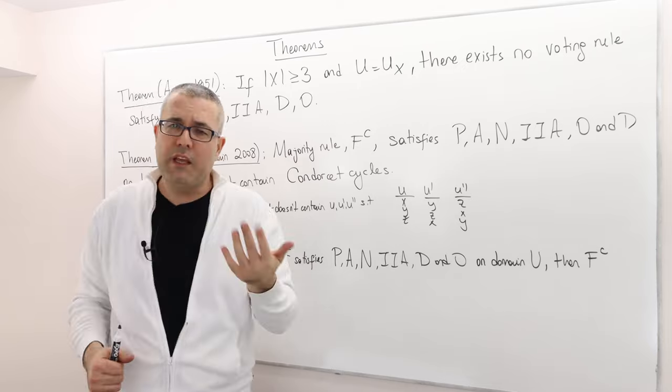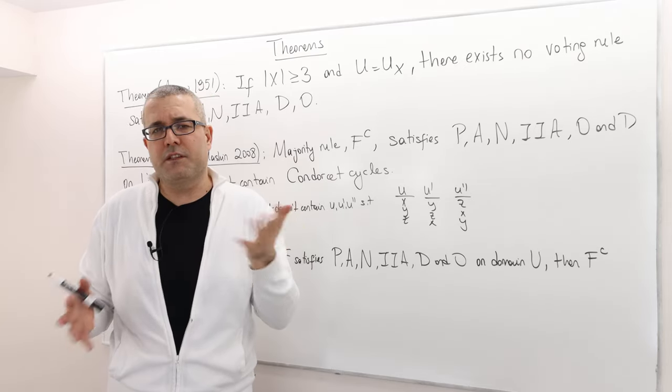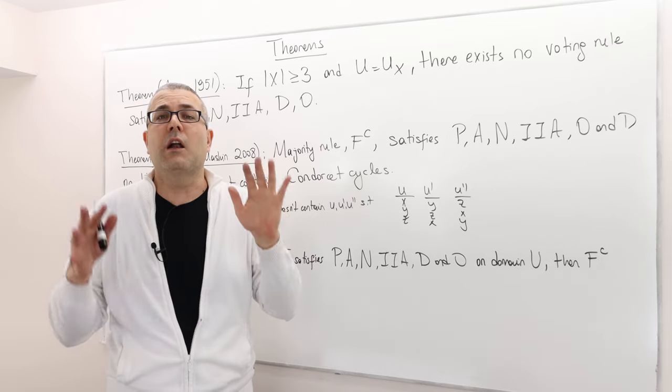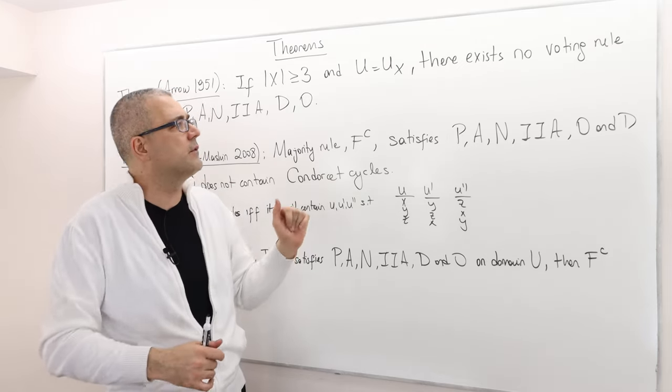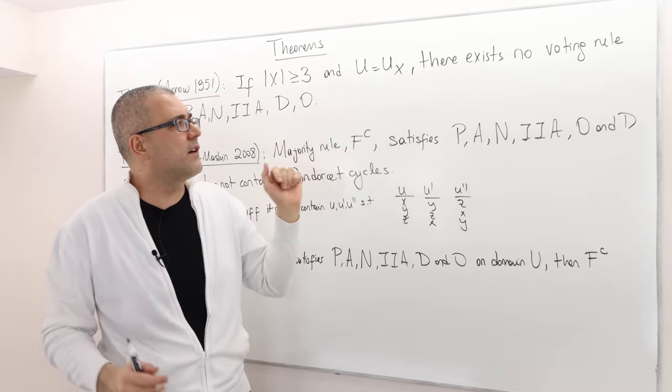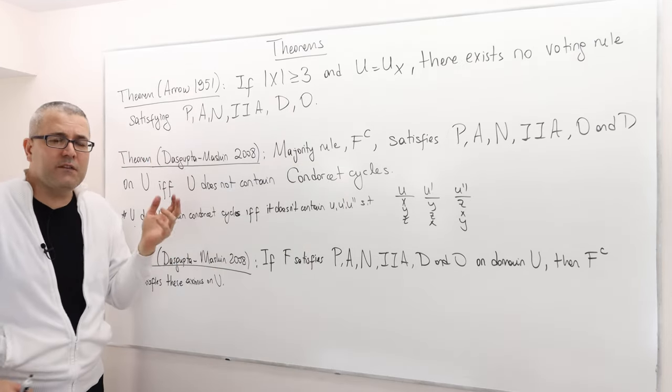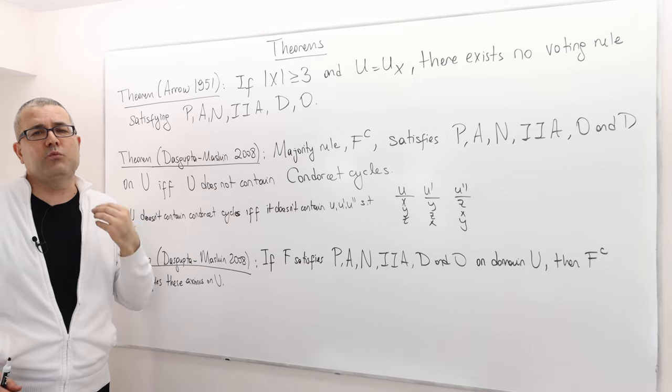The only restriction we have, remember, is indifference, so we don't have any indifference. Other than that, all utility functions are potentially possible. Well then, in this environment there exists no voting rule which satisfies all the six axioms we talked about.